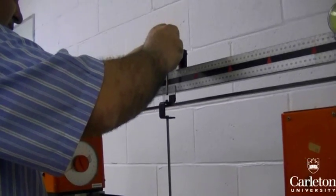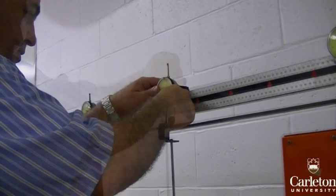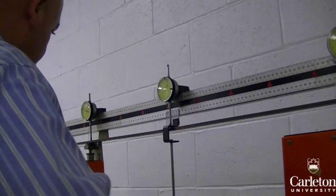Attach the third displacement gauge to the rail directly on top of the applied load so that the tip of the gauge rests on the loading hanger.